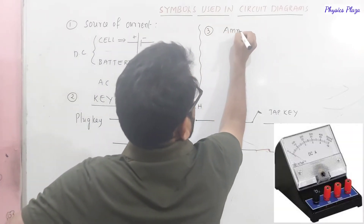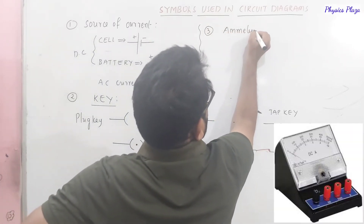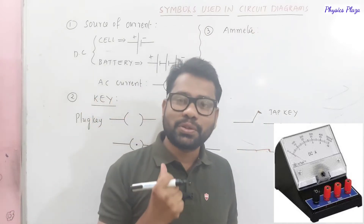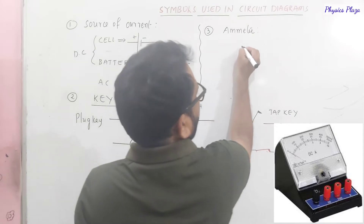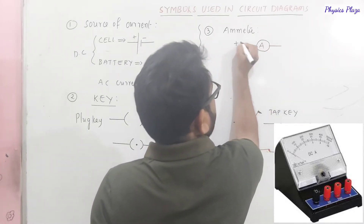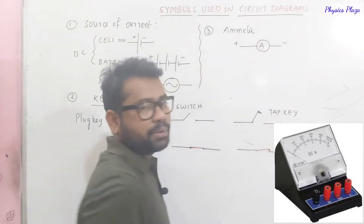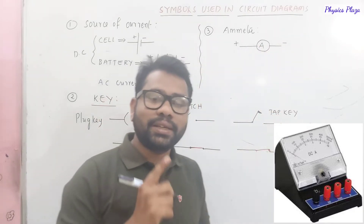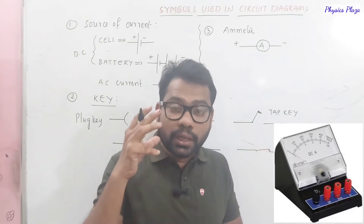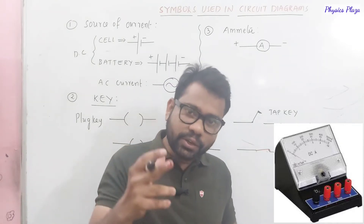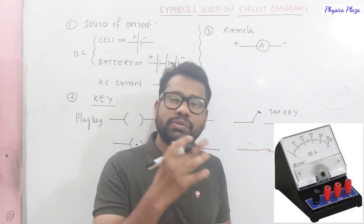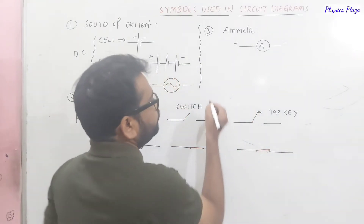The third component is the ammeter. It is a device used to measure the amount of current in a circuit. Its symbol is capital A, with a positive and negative terminal. It is always connected in series with the circuit so that all the current flowing passes through it.